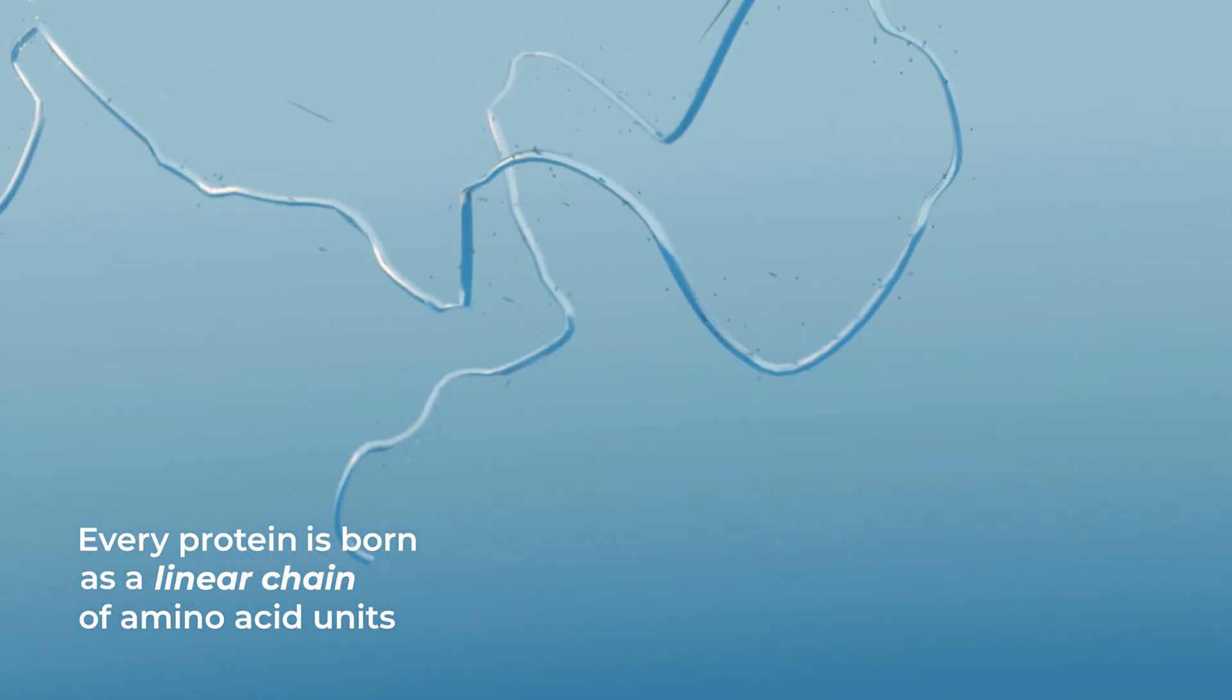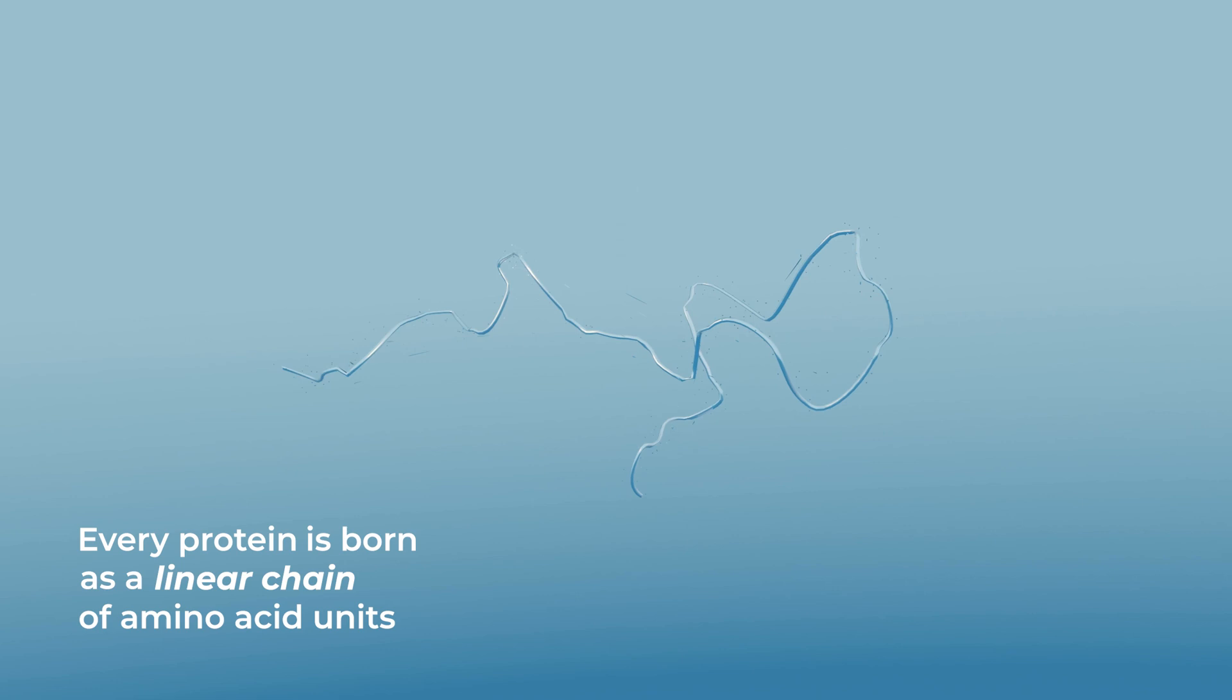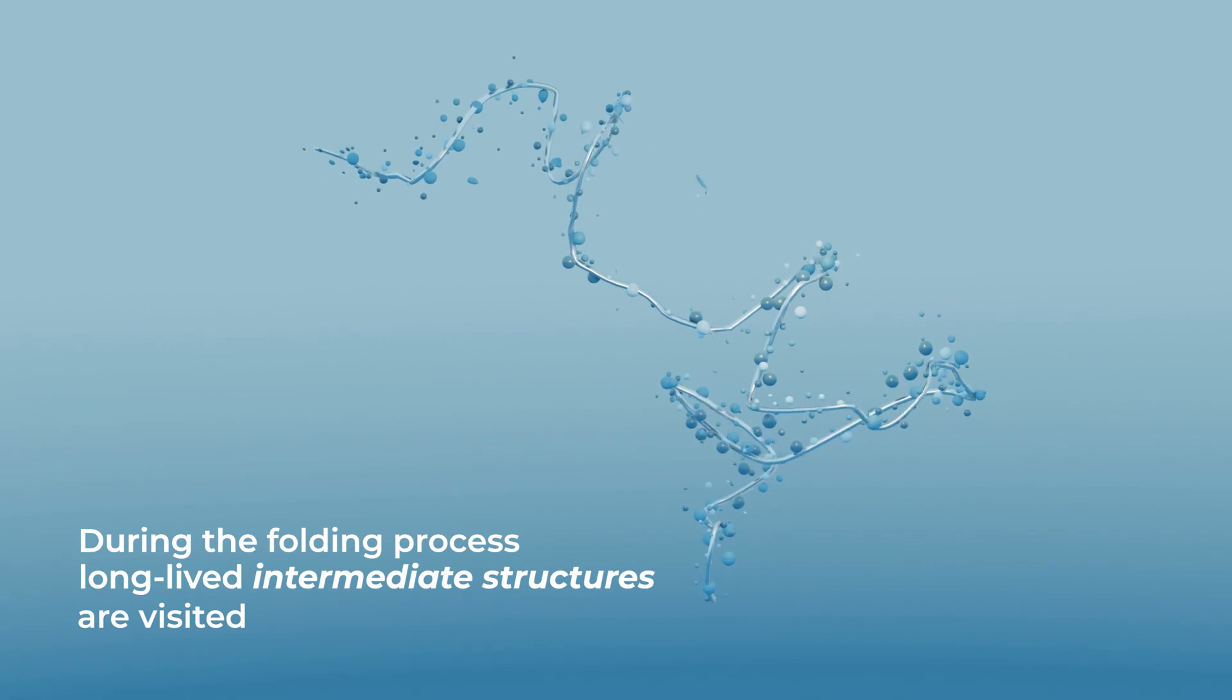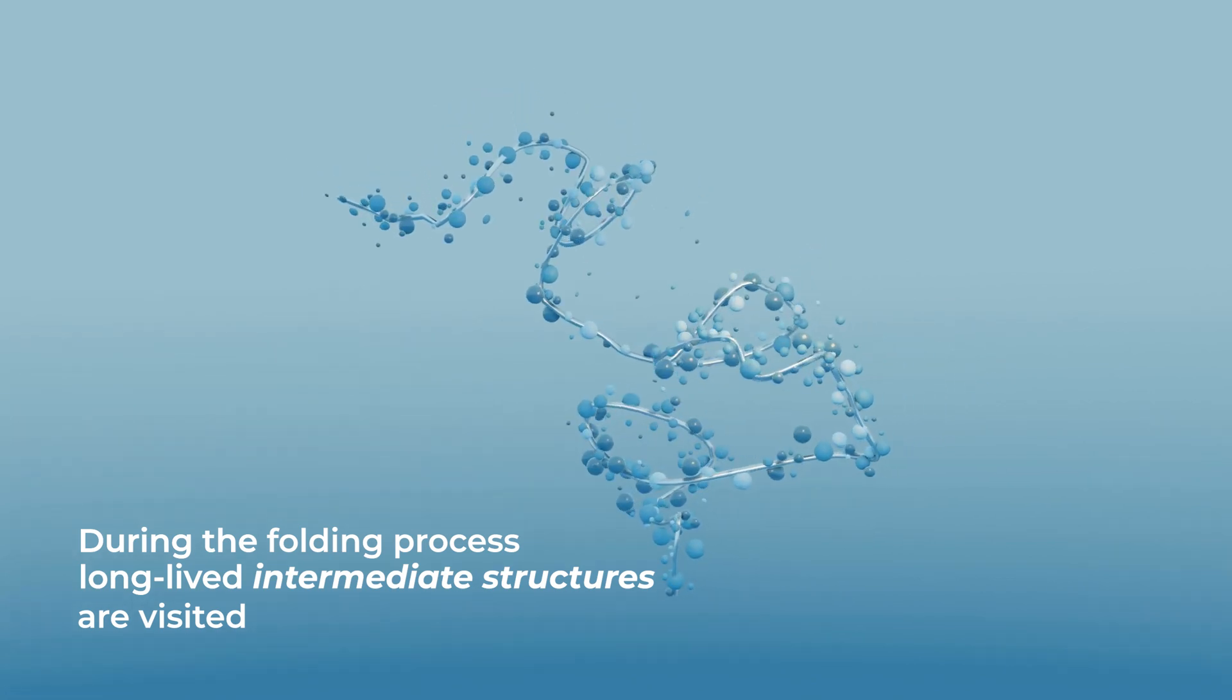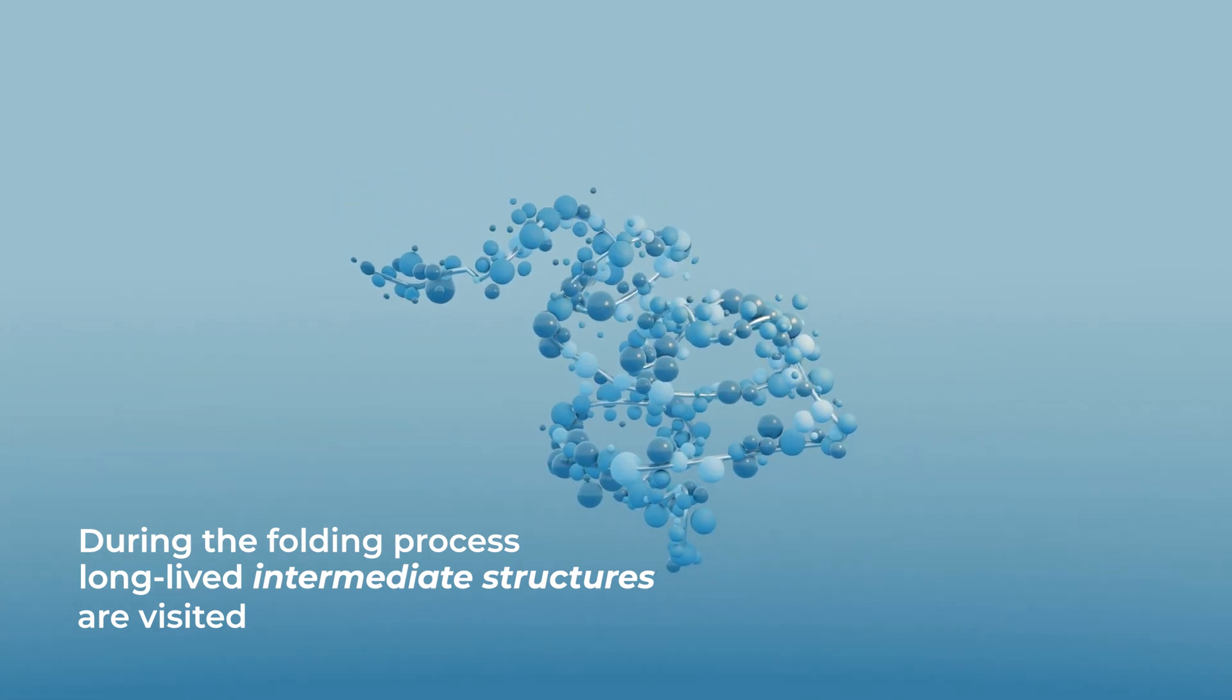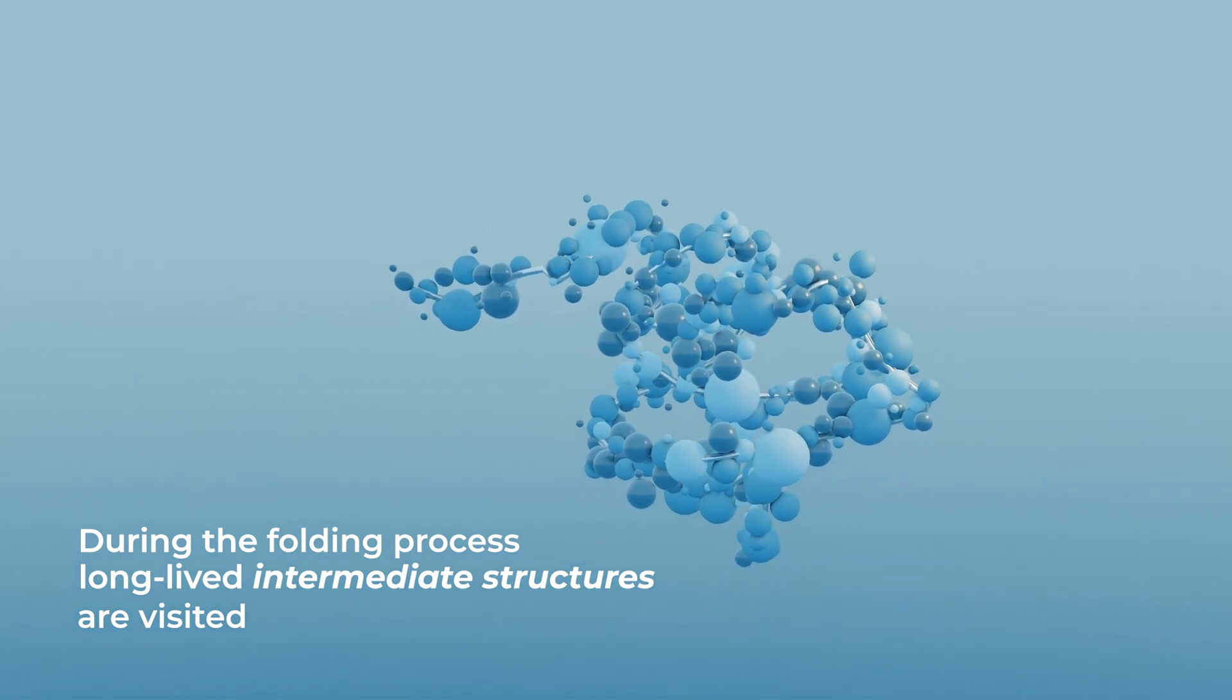Every protein is born as a linear chain of amino acid units that folds to acquire its three-dimensional functional form. During the folding process, long-lived intermediate structures are visited. These represent new targets made available by Sybilis technology.